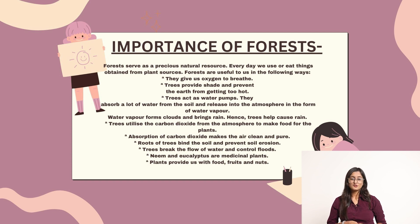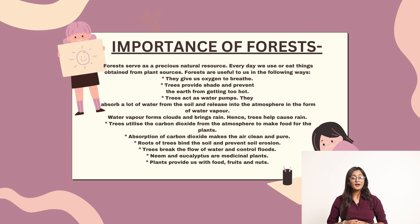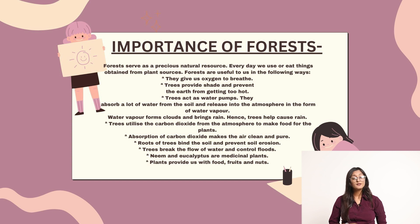They give us oxygen to breathe. Trees provide shade and prevent the earth from getting too hot. Trees act as water pumps — they absorb a lot of water from the soil and release it into the atmosphere in the form of water vapour. Water vapour forms clouds and brings rain. Hence, trees help cause rain.